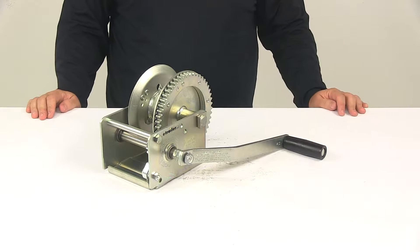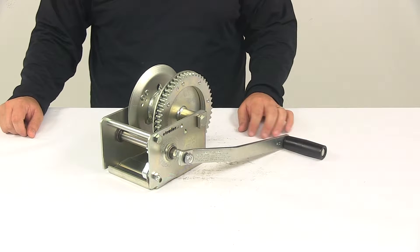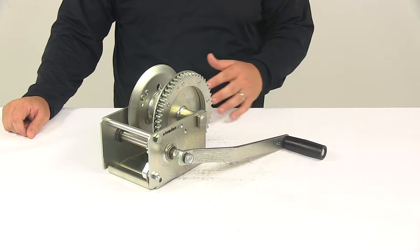Today we're going to be taking a look at the Fulton High Performance Brake Winch. A brake winch is perfect for boat lifts, grain augers, manual forklifts, hoists, and many more applications.